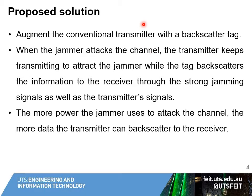In particular, we deploy a backscatter tag at the transmitter. When the jammer attacks the channel, the transmitter keeps transmitting to engage the jammer and drain its power. At the same time, the tag will backscatter the real information to the receiver through the strong jamming signal and the signal sent from the transmitter. In this way we can effectively deal with the reactive jammer — the more power the jammer uses to attack the channel, the more data the transmitter can backscatter to the receiver.